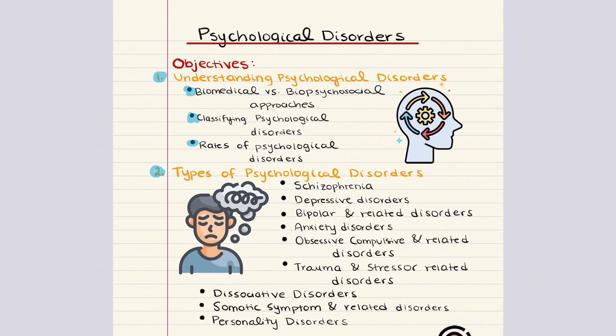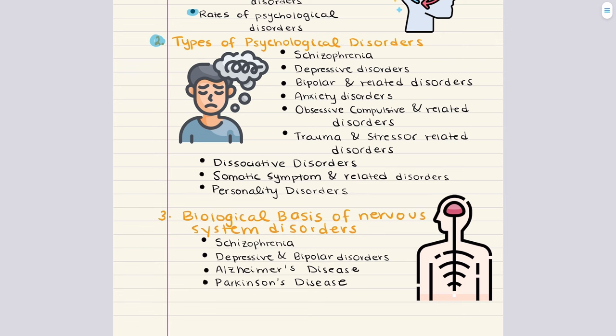Then we'll move into objective two, Types of Psychological Disorders, covering schizophrenia, depressive disorders, bipolar, anxiety disorders, OCD and related disorders, trauma and stress related disorders, dissociative disorders, somatic symptoms, and personality disorders. Our last objective is The Biological Basis of Nervous System Disorders, where we'll discuss depression's impact on hormone and neurotransmitter levels, recall features and risk factors for Alzheimer's disease, and explain the role of dopamine in schizophrenia and Parkinson's disease.